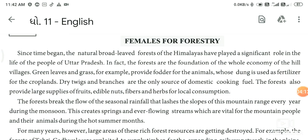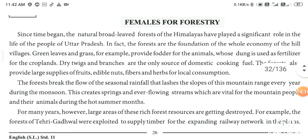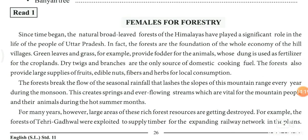However, large areas of this rich forest are getting destroyed. The Himalayan jungles are being reduced year by year. For example, the forests of Tehri Garhwal were exploited to supply timber for the expanding railway network on the plains. The trees of Tehri Garhwal were cut and that timber was used to support the railway network expansion.